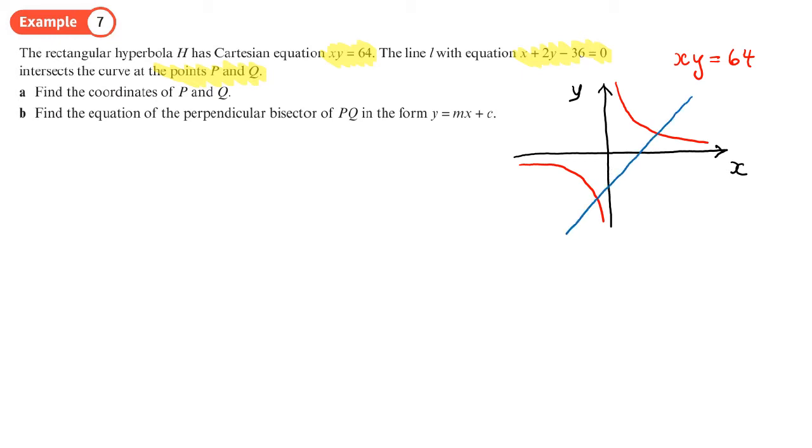I'm not going to draw the line on because at the moment I don't know whether the line goes like this and intersects the two parts of the graph that way, or whether it goes like this and intersects there, or even goes like this. I don't know where those intersections are and I don't want to draw it and mislead you. Maybe if we work that out after we've done part a, then we might draw the line in and input where the points P and Q are.